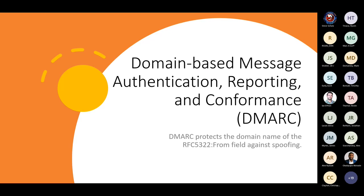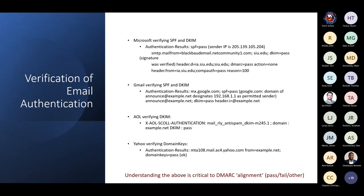Finally, let's get to what we're talking about today: DMARC. The RFC document states it's protecting the domain name of the from field — the actual from address you see in Outlook — against spoofing. This is what we're looking for. SPF and DKIM are the cornerstone of making DMARC work. This slide shows examples of message headers and how Microsoft reports back an SPF pass. You're going to look for a line called authentication-results.